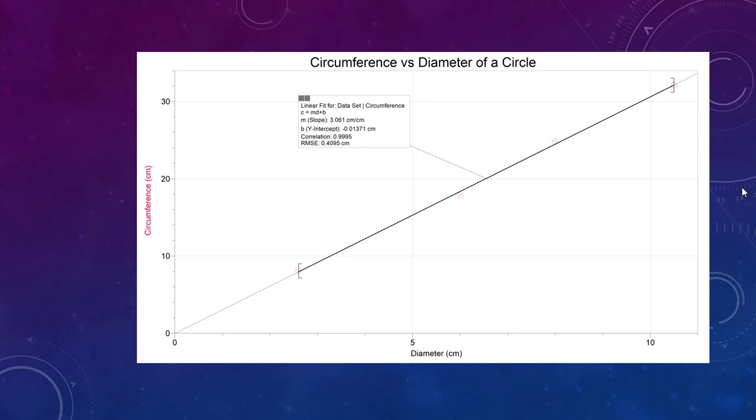The independent variable in science is the one that the experimenter controls. And in this particular lab it really could have been either the circumference or the diameter, but to keep things simple let's just say that we are choosing circles with different sized diameters and we're looking to see how the circumference changes with that.